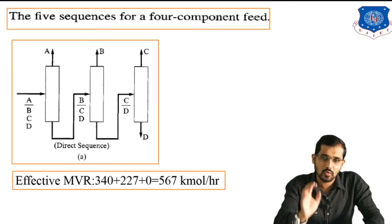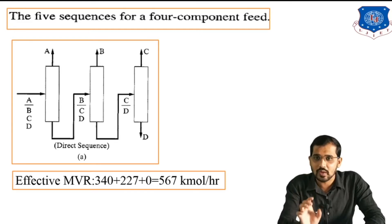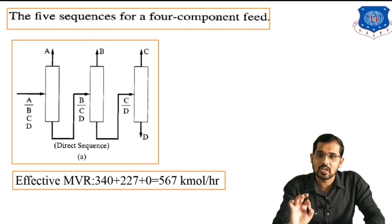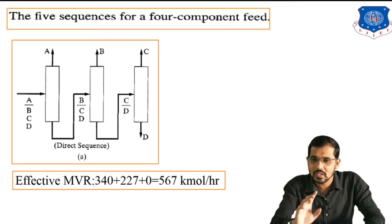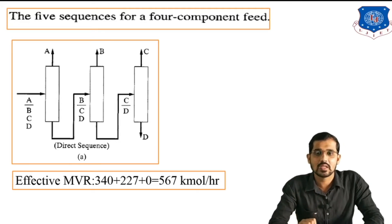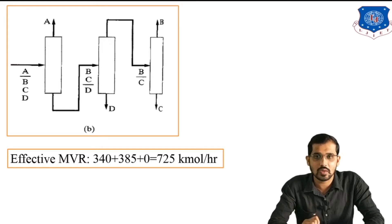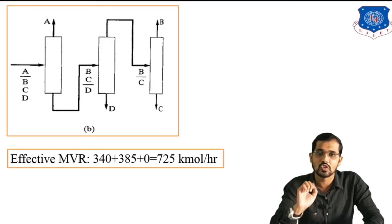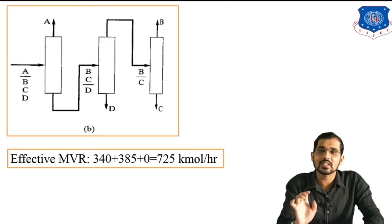For the second figure: A is separated from BCD with value 340 kmol/hr. After that we separate the D component from the mixture of BCD, value is 385 kmol/hr. Lastly there is a separation of B from C, value is 0. So the addition of all these marginal vapor rates gives 725 kmol/hr for sequence 2.